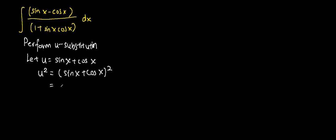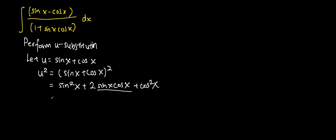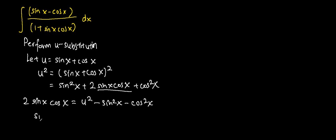This is equivalent to sin²x plus 2 sin x cos x plus cos²x. Then we make 2 sin x cos x the subject, so we have 2 sin x cos x equals u squared minus sin²x minus cos²x. Therefore, sin x cos x is equivalent to u squared minus sin²x minus cos²x, divided by 2.